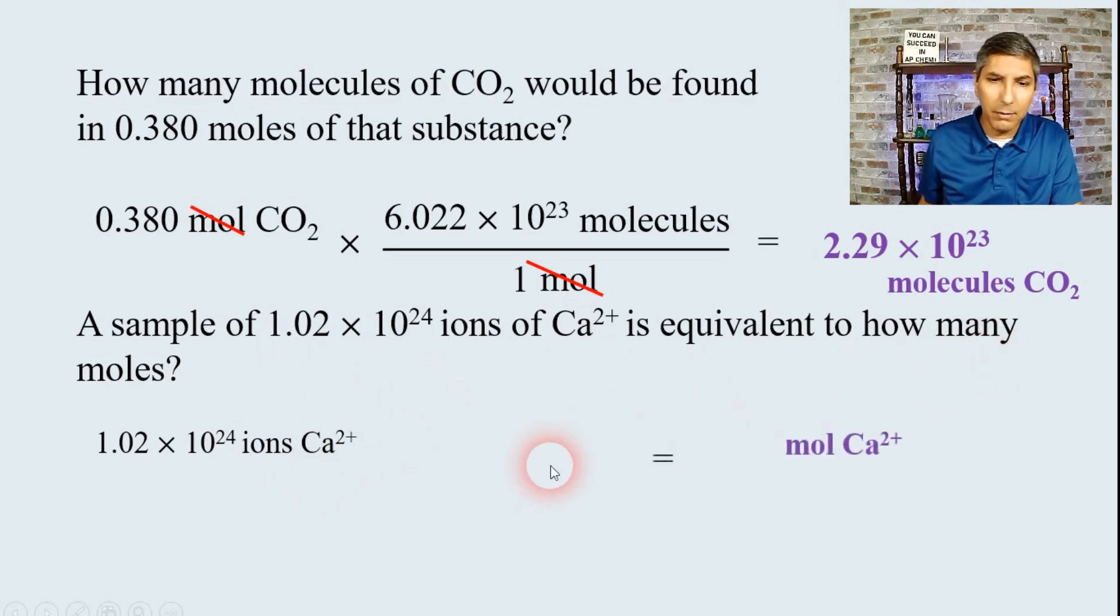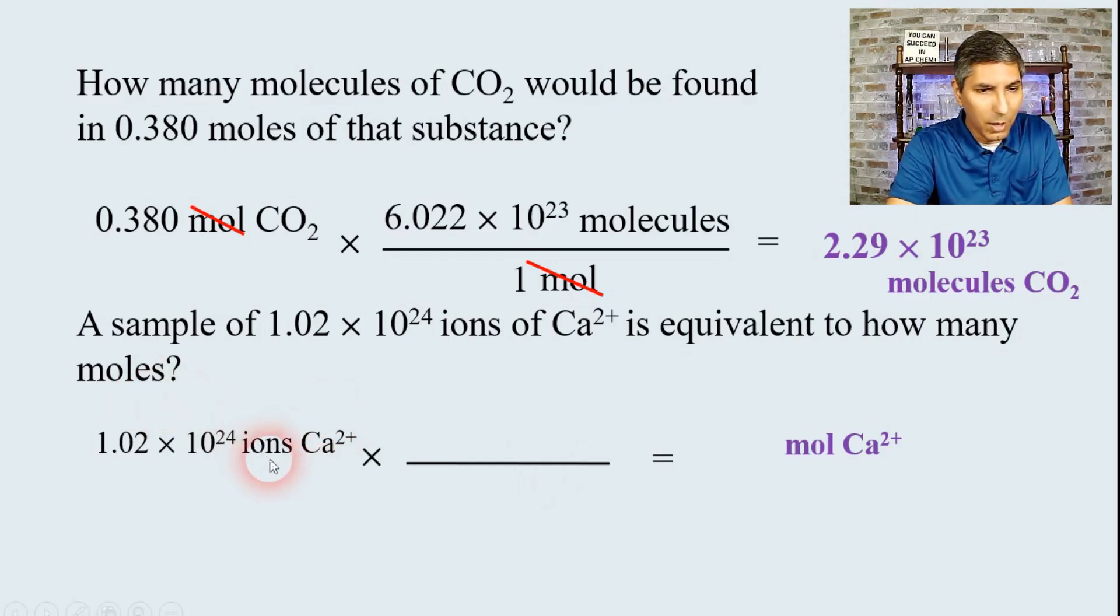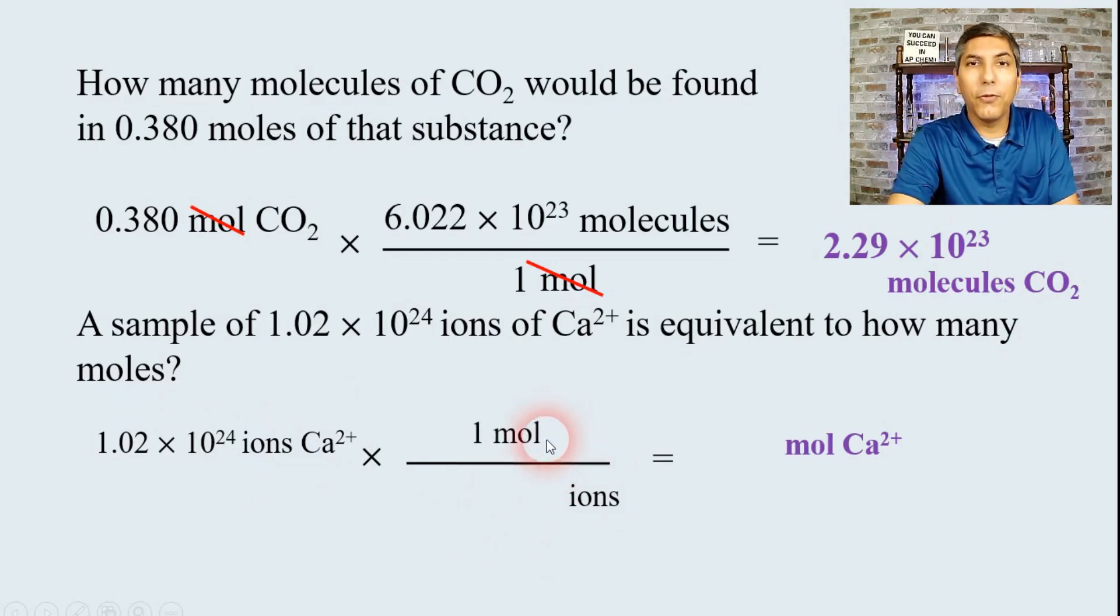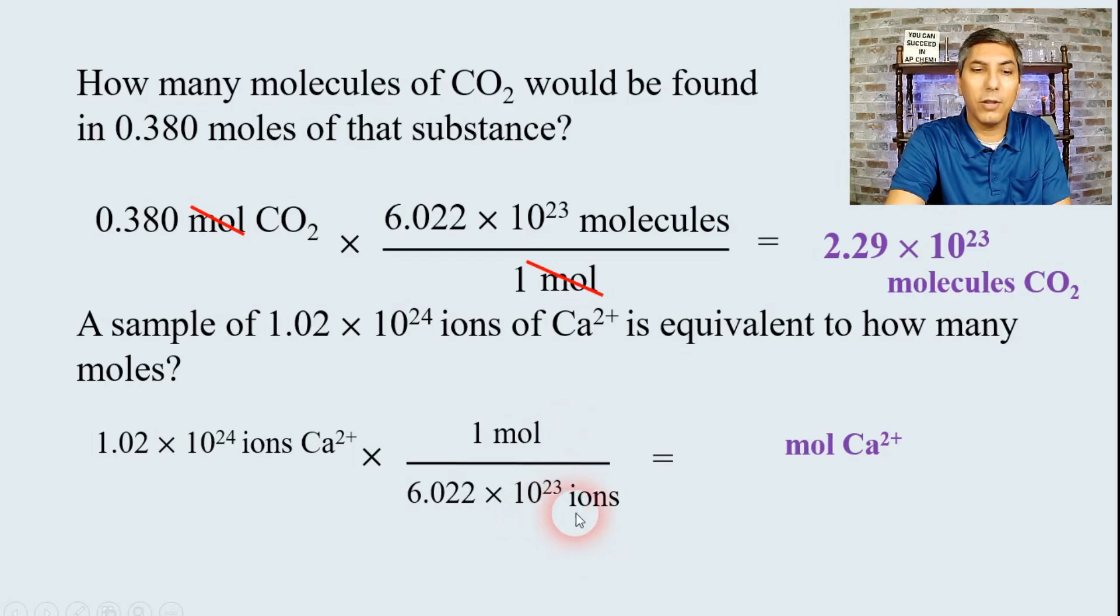And this time, we're trying to convert to moles. So way down at the end, we're going to write moles of Ca2+. And in our conversion factor, we have to put ions on the bottom this time. And we're converting to moles. So moles will go on the top. And we know that there are 6.022 times 10 to the 23rd ions in one mole of this substance.